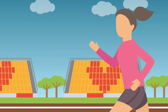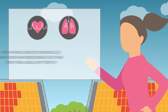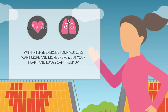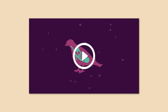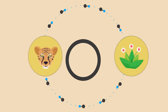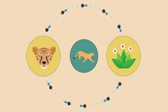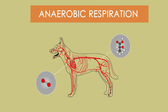You are running a 1500 metre race, breathing deeply to get the oxygen so that you can respire and keep up the energy supply to your muscles. Your muscles keep wanting more and more energy but your lungs can't keep up. Do you have to quit the race? No. In this video we are going to have a look at anaerobic respiration in both animals and plants.